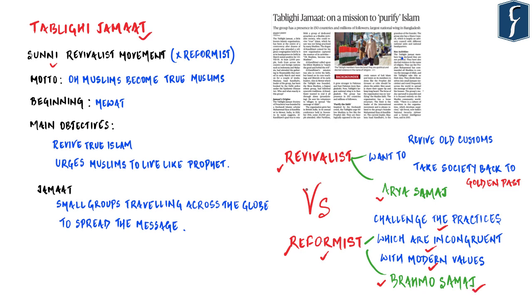On the contrary, revivalist movements agree that modern practices of their religion are not the same as those of the golden past, and hence they want to revive old customs and take society back to that golden past. One of the most prominent examples of a Hindu revivalist movement is Arya Samaj, whose main motto was 'Go Back to Vedas.' Revivalist movements are influenced by past or 'pure' traditions which existed hundreds or thousands of years back.